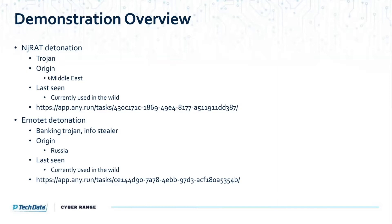The two detonations today are going to be NJRAT — I know from our initial poll that many of you are in sales roles. NJRAT is a remote access Trojan, meaning once deployed to an endpoint, an unauthorized user outside your environment can establish access to the command line on the infected machine, kill processes, remotely execute or manipulate files, and manipulate the system registry. It was first seen in 2013 but has been seen as recently as today. It is still in the wild, still compromising endpoints, and originates from the Middle East.